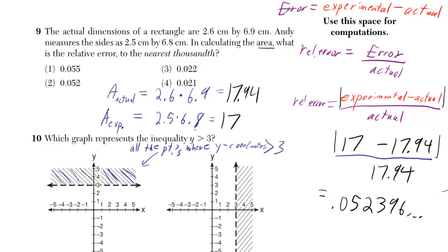So we just do 2.5 times 6.8 to get the experimental one. That's 17, and that goes where we see experimental. That's where we plug in right there.